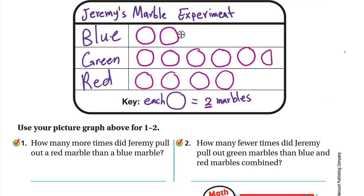Use your picture graph for questions 1 and 2. Number one: how many more times did Jeremy pull out a red marble than a blue marble? We have two circles more in the red than the blue, and each circle is two marbles. So he pulled the red four more times than the blue.